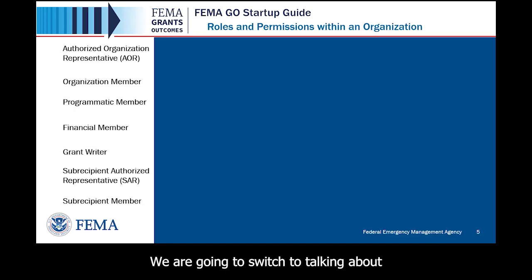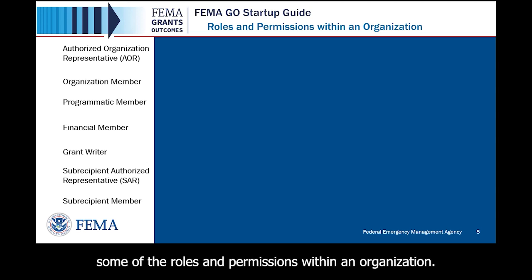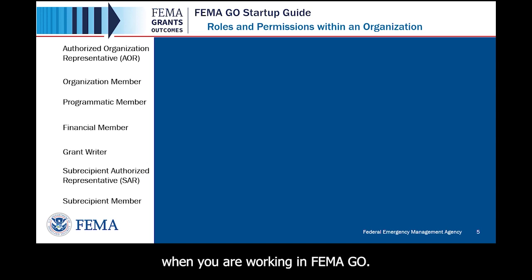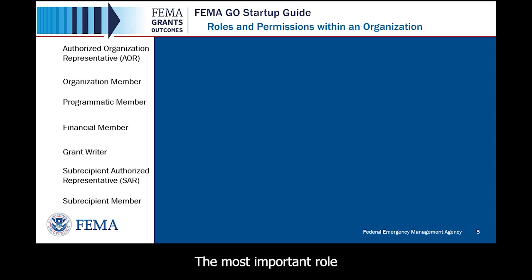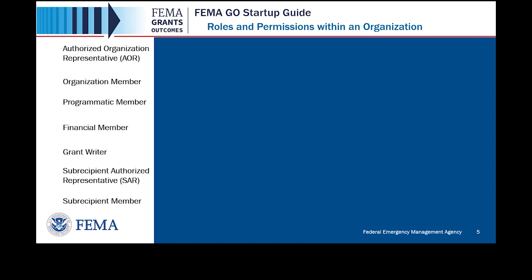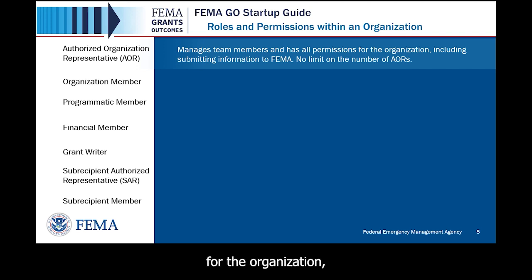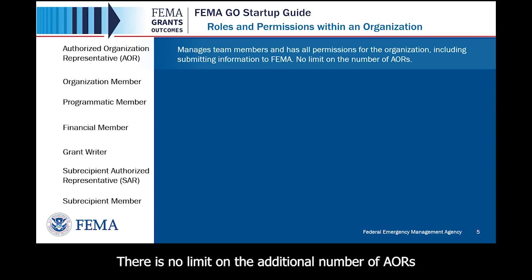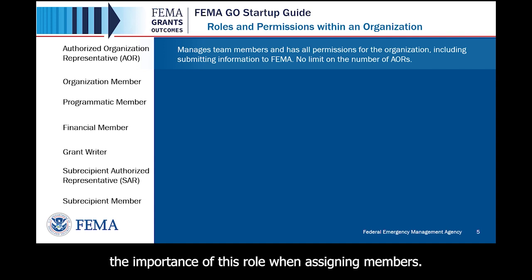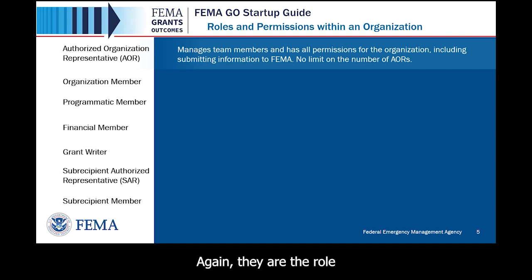We are now going to talk about roles and permissions within an organization when working in FEMA GO. There are multiple roles that can be assigned. The most important role is the Authorized Organization Representative, also known as an AOR. The AOR manages team members and has all permissions for the organization, including submitting information to FEMA. There is no limit on the additional number of AORs an organization can assign, but keep in mind the importance of this role — they are the role able to submit an application to FEMA.